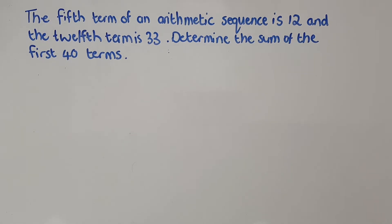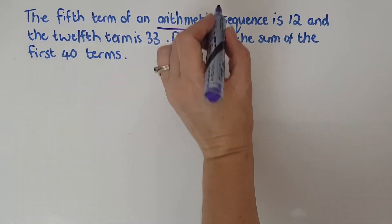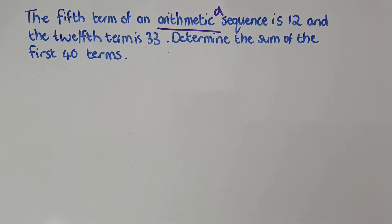The fifth term of an arithmetic sequence is 12. Great, they told me it's arithmetic, so there's a constant difference. The 12th term is 33. Before I even look at the question, I'm going to rewrite that in math terms.